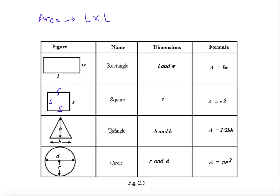The area of a triangle is height times base divided by two. This logic comes from completing the triangle into a rectangle: the height is one side and the base is the other side, giving length times width. Since the triangle is half of that rectangle, we divide by two.